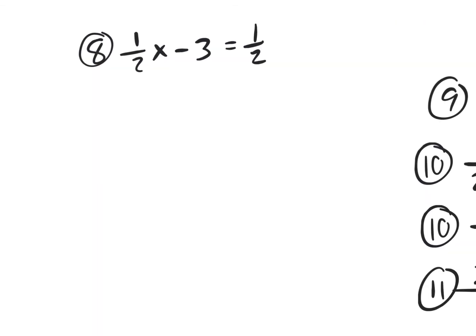So why am I teaching you this alternate path? Because when working on the next problem, your first instinct will be to get rid of the minus 3 by going plus 3, but then you've got to add a number with the fraction — 3 plus a half is 3 and a half. Instead, let's go the alternate route: get rid of the fraction one half by multiplying everything by the denominator 2. The 2 on top divided by 2 on the bottom cancels out, leaving a simple 1x, which I'll just write as x.